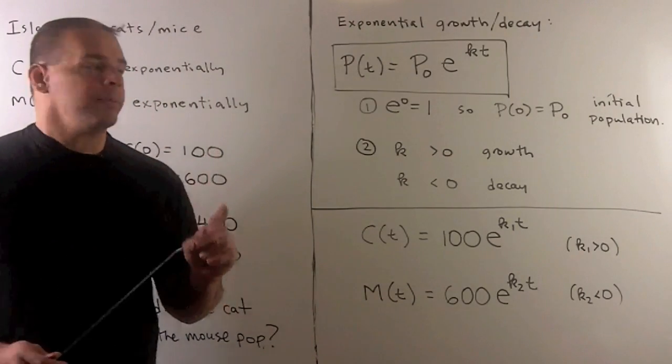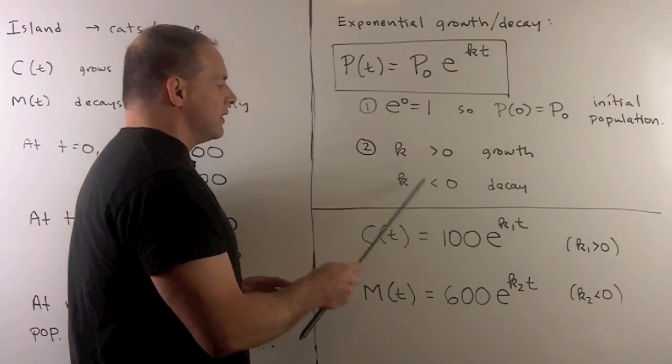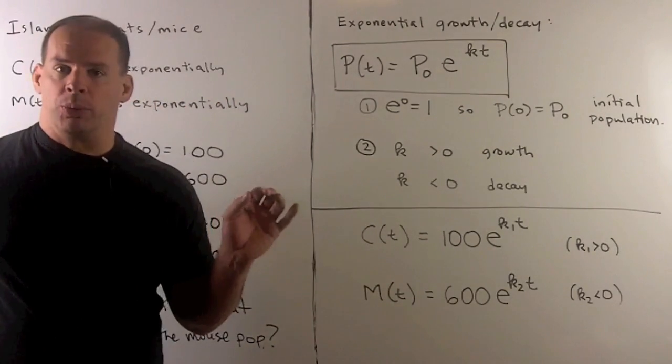We also have, if the k in the exponent is positive, we have growth. If it's negative, we'll have decay. So we can use that as a check on our numbers when we find them.